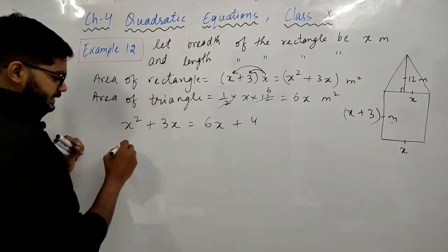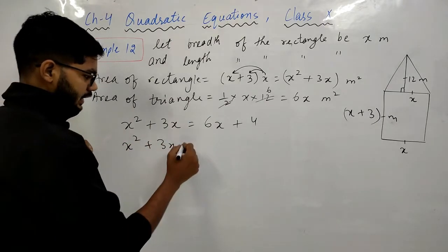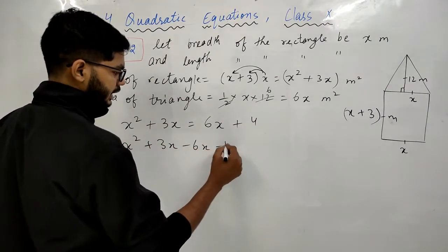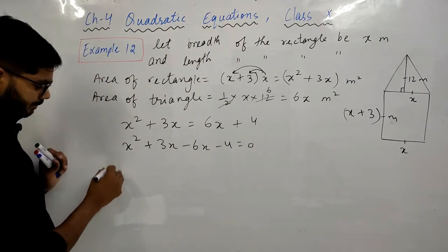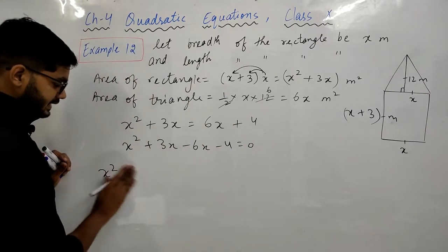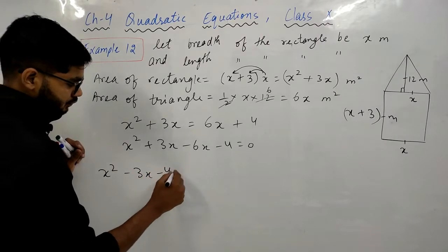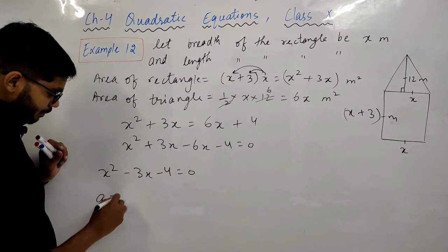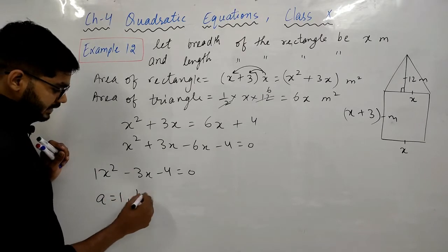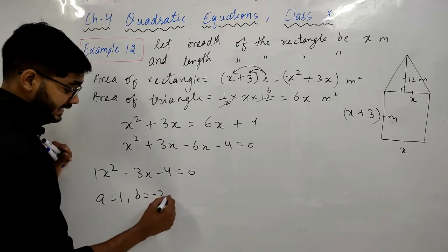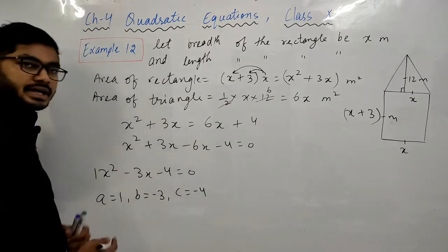अब इसको solve करते हैं — सभी terms एक तरफ लाएंगे: x² + 3x − 6x − 4 = 0, यानी x² − 3x − 4 = 0। यहाँ से a = 1, b = −3, और c = −4।